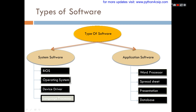Continuing from the last video: different types of system software are number one operating system, number two BIOS, three device drivers, and then language processors. Application programs include word processors like Microsoft Word, spreadsheets like Excel, presentations like Microsoft PowerPoint, and database software like Access. Other specialized software like railway reservation systems, hospital management systems, finance systems, banking systems, and school management systems also come under application software.